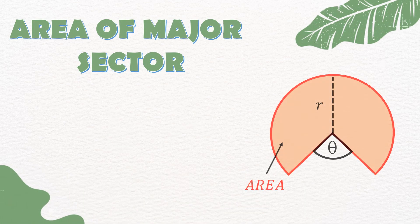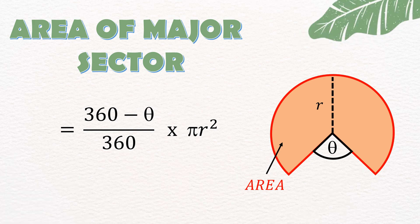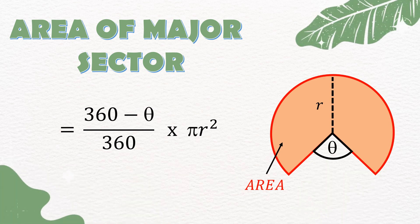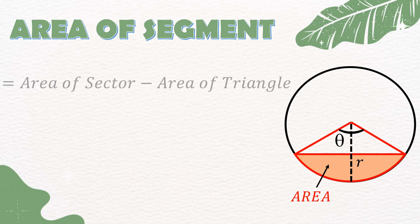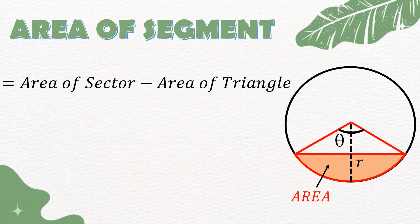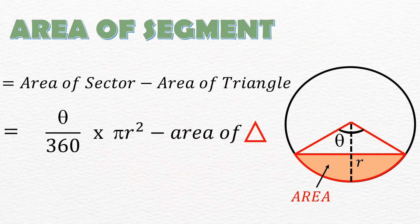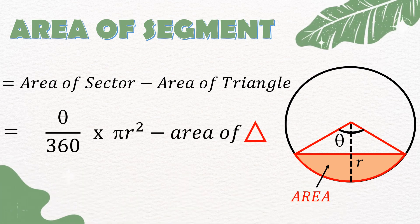Area of major sector is equal to ((360 − θ)/360) × πr². Area of segment is equal to area of sector minus area of triangle, which is also equal to (θ/360) × πr² minus area of triangle.